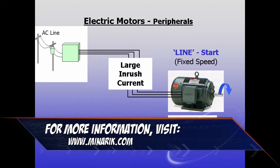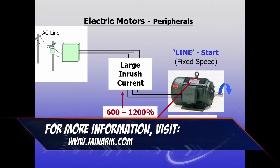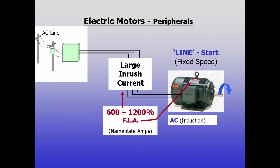When AC motors are started from the line, they draw large amounts of inrush current. Inrush can be as much as 6 to 12 times nameplate amperage depending on the load. This lasts for a few seconds until the motor gets to rated speed.